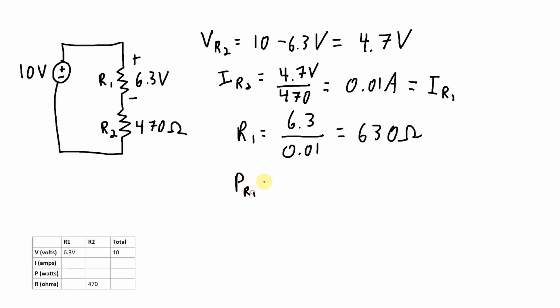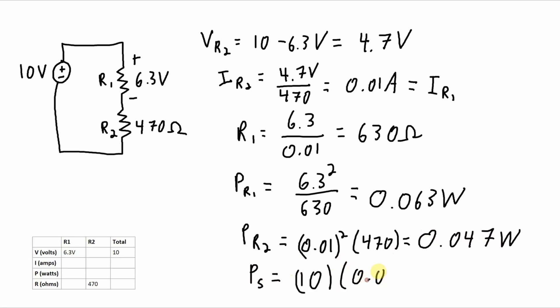Now I can figure out the power that's dissipated by R1. A number of ways I can do that. Let's go V squared over R. So we've got 6.3 squared over 630. For R2, let's calculate it a different way. Let's go current squared times resistance. And then the power from the source, let's go V times I. So 10 times 0.01.